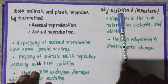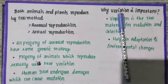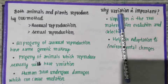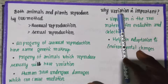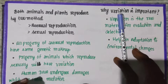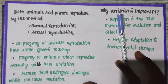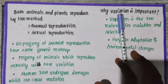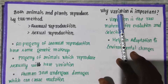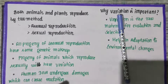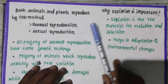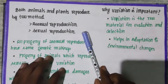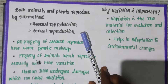They are genetically and morphologically similar. Morphologically means external appearance. If they are clones of the parents, the genetic makeup and external appearance are going to be exactly similar to the parents — that means they are clones.